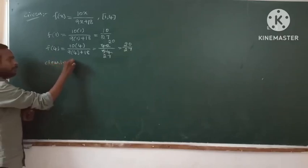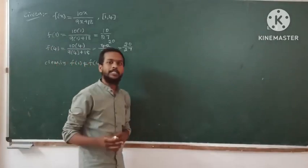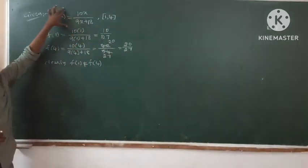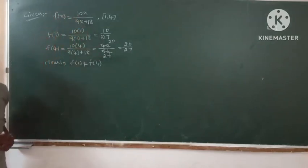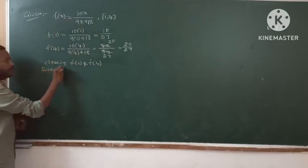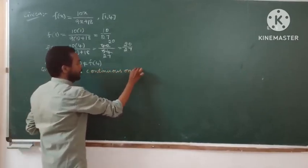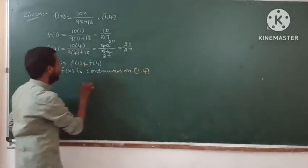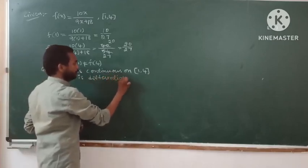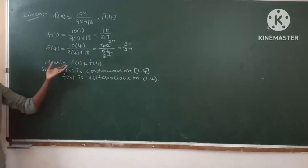Clearly, f(1) = 10/27 is not equal to f(4) = 20/27. Also, since the question states the function satisfies the mean value theorem, this function is continuous on [1, 4] and differentiable on (1, 4). The given function satisfies all the conditions of Lagrange's mean value theorem.